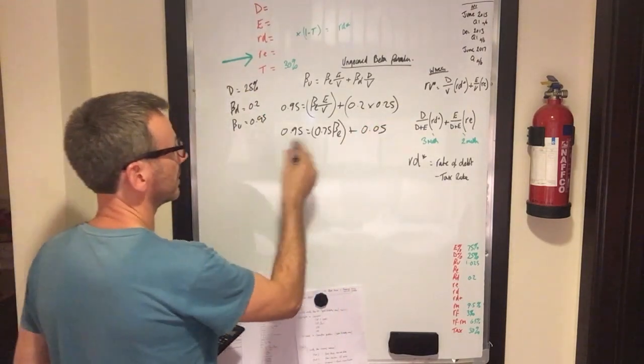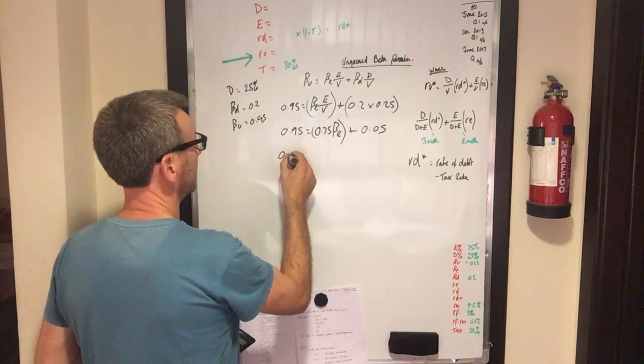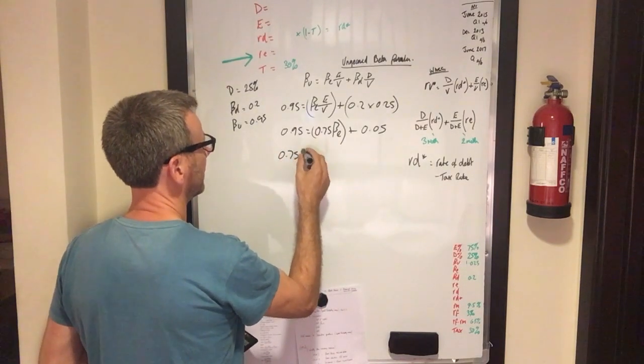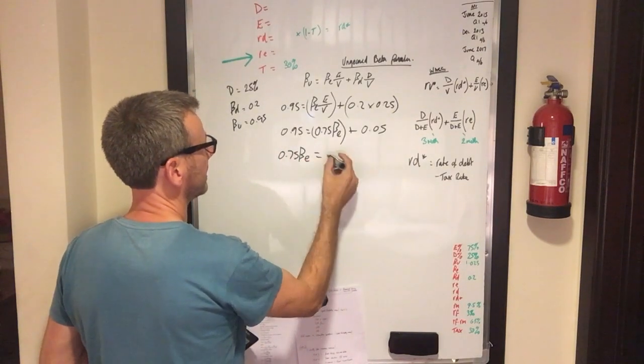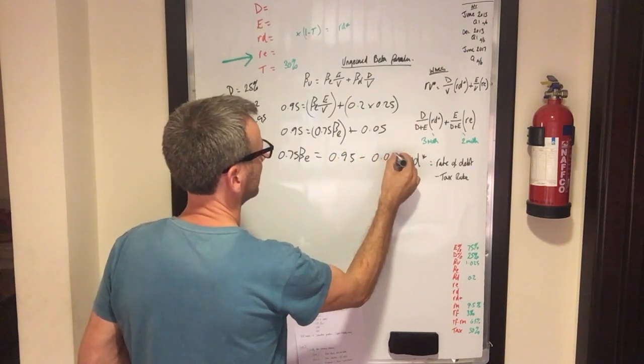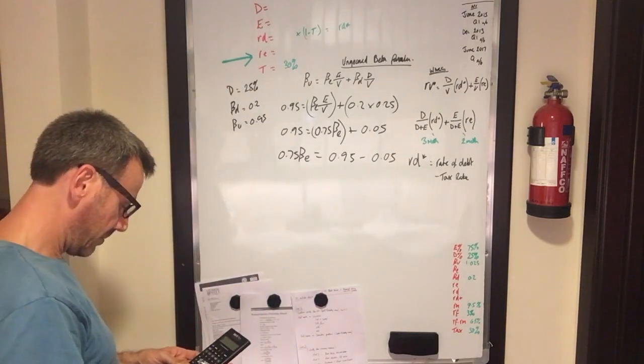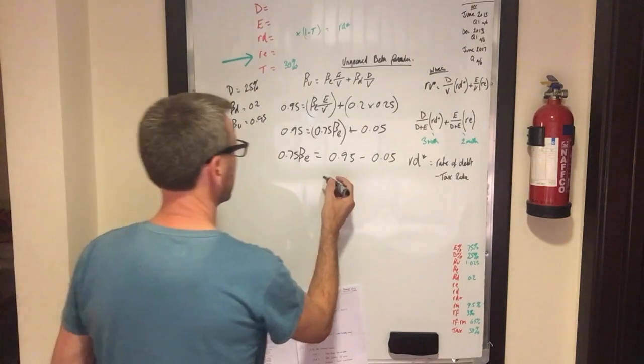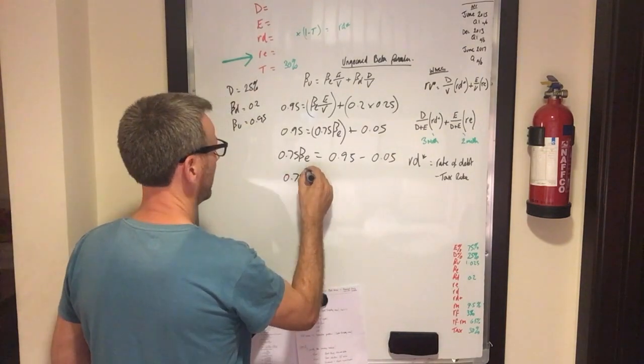Just rearrange that, rearrange the equation now. 0.75 beta of equity is now equal to 0.95 minus 0.05. So 0.95, 0.905.